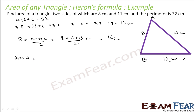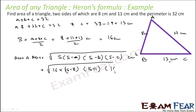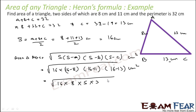Now find the area of triangle ABC = root of S(S−A)(S−B)(S−C) in cm². Putting values: root of 16 × (16−8) × (16−11) × (16−13) = root of 16 × 8 × 5 × 3 cm². Solving this, you get 8√30 cm², and that is the answer.